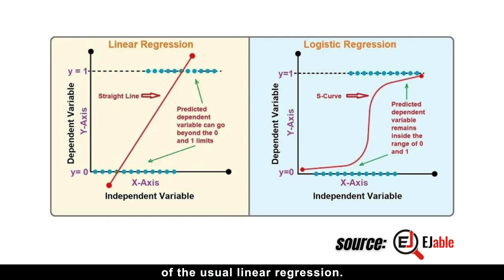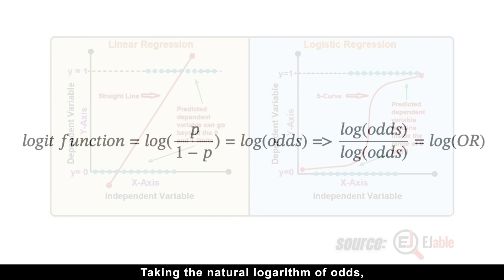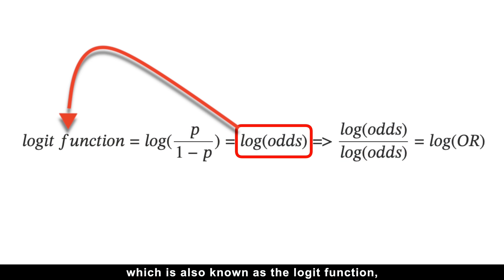Taking the natural logarithm of odds, which is also known as the logit function, serves as the foundation of logistic regression. The beauty of the logit function is its simplicity, because it only has one parameter, p, which represents probability.